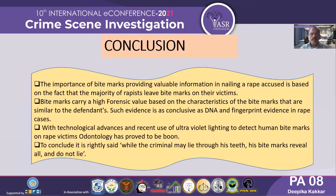In conclusion, bite marks provide valuable information in identifying a rape accused, as the majority of rapists leave bite marks on the victim's body. These bite marks carry high forensic value because they are based on characteristics unique to the offender and can be conclusive when combined with other evidence like DNA and fingerprints in rape cases. With technological advances and the use of UV lighting to detect human bite marks, this field has proved to be a booming area. While a criminal may lie through his teeth, his bite marks reveal all and do not lie. Thank you.